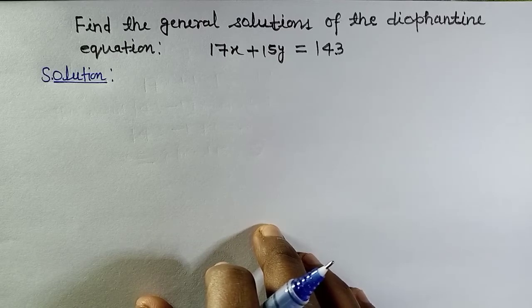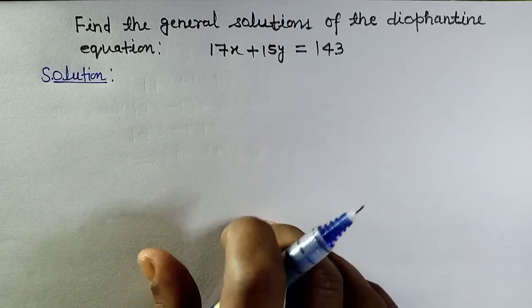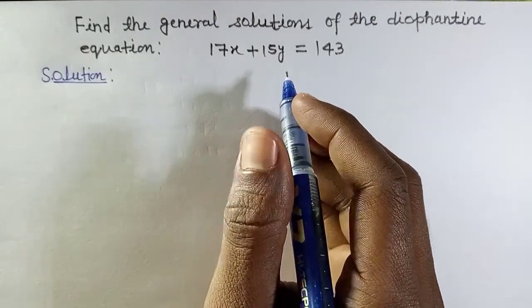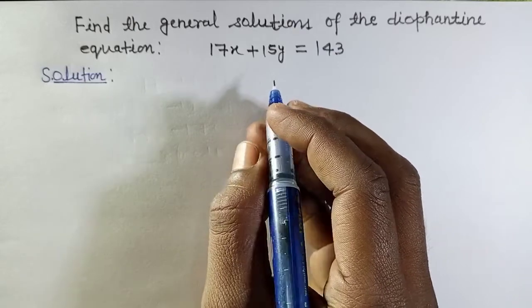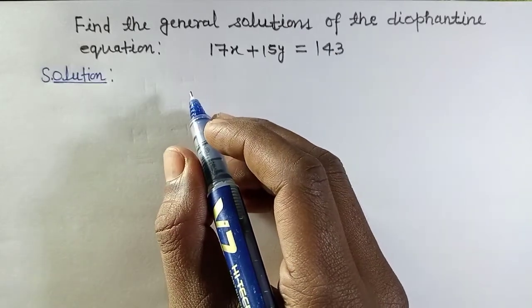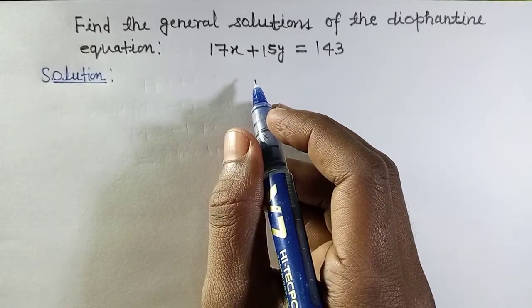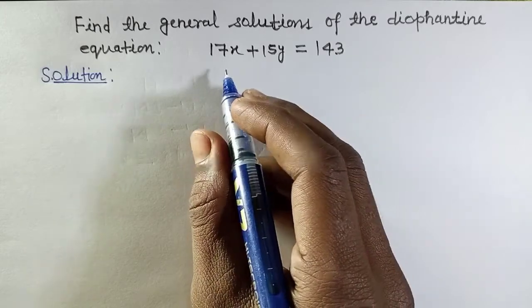Find the general solutions of the Diophantine equation 17x plus 15y equals 143. This means we have to find the values of x and y which satisfy the given equation.